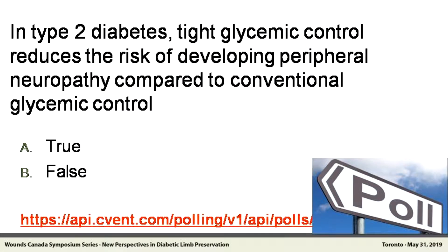Here's a poll question: in type 2 diabetes, does tight glycemic control reduce the risk of developing peripheral neuropathy compared to conventional glycemic control — true or false? We have 86% saying true and 15% saying false. The answer is actually false. But if we change the statement to type 1 diabetes, the statement is true. So why did glycemic control not show a reduction in peripheral neuropathy and diabetic foot disease in type 2 diabetes?